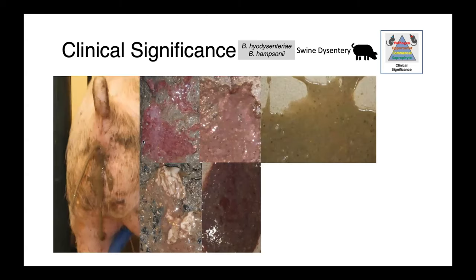In these images here, you can see the variability of diarrhea character in pigs with swine dysentery. It can be a very profuse hosepipe diarrhea that is very watery. It can be blood-tinged, we can have frank blood, and we can have large fibrinous casts, suggesting a lot of inflammation in the colon.